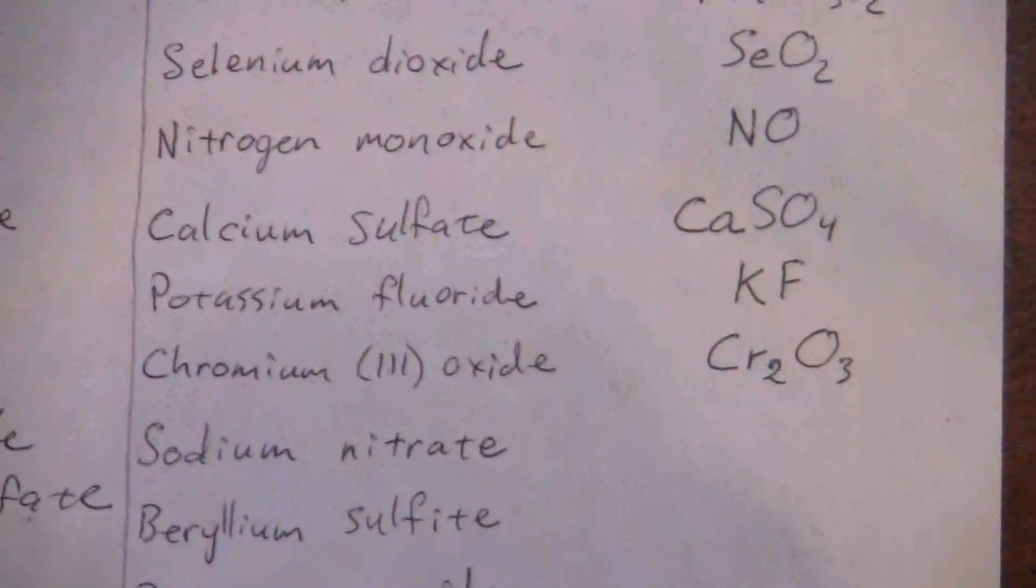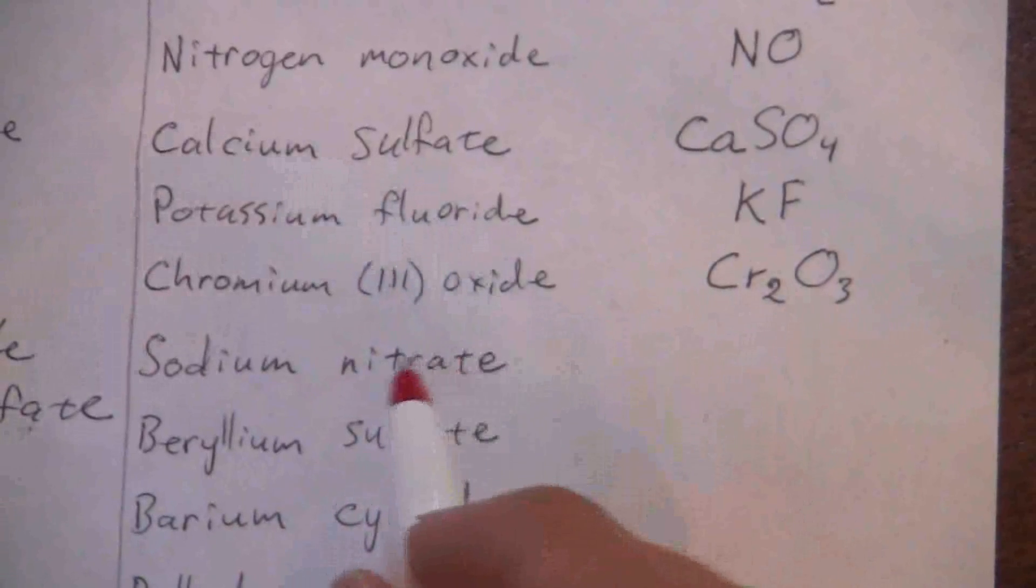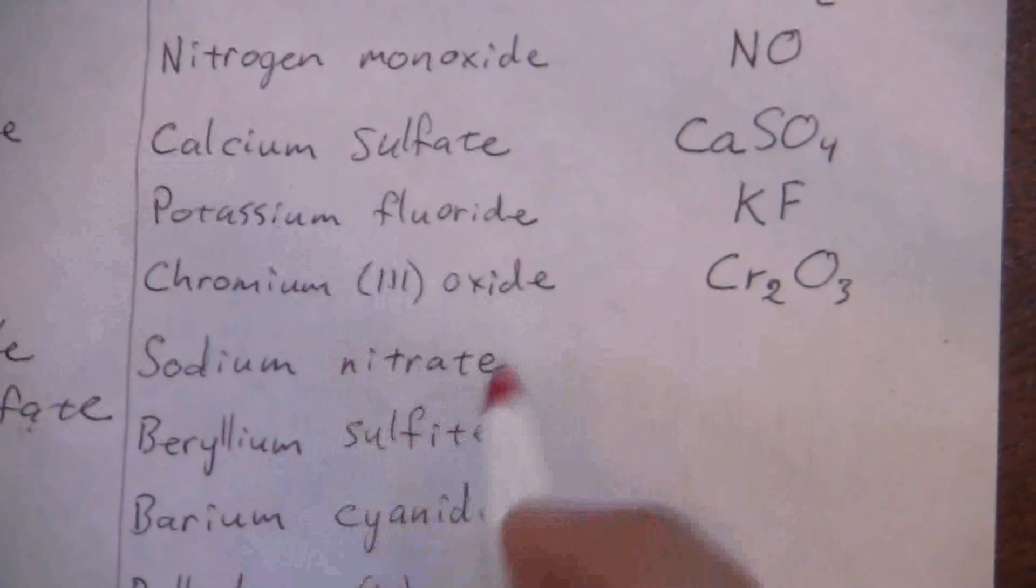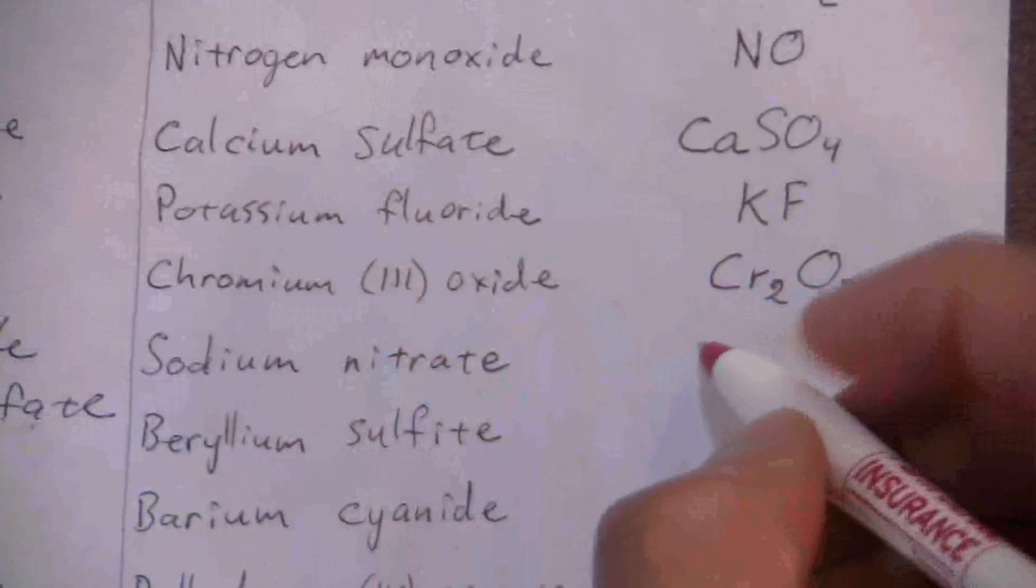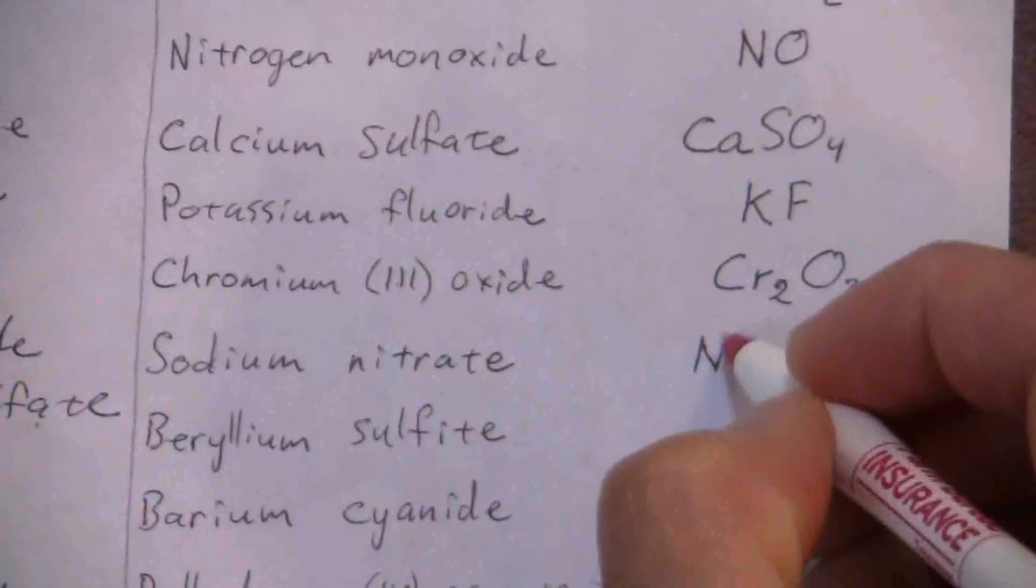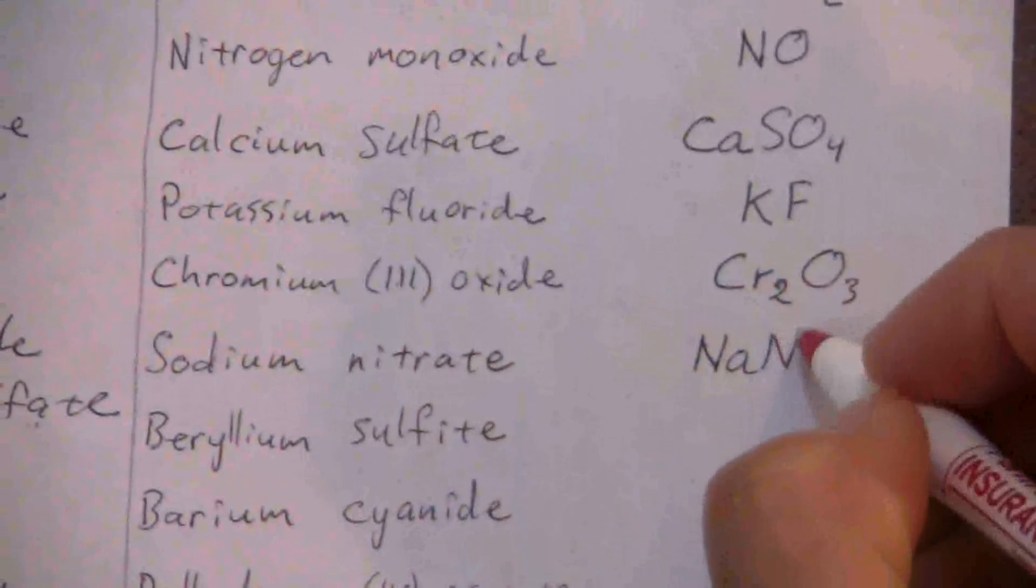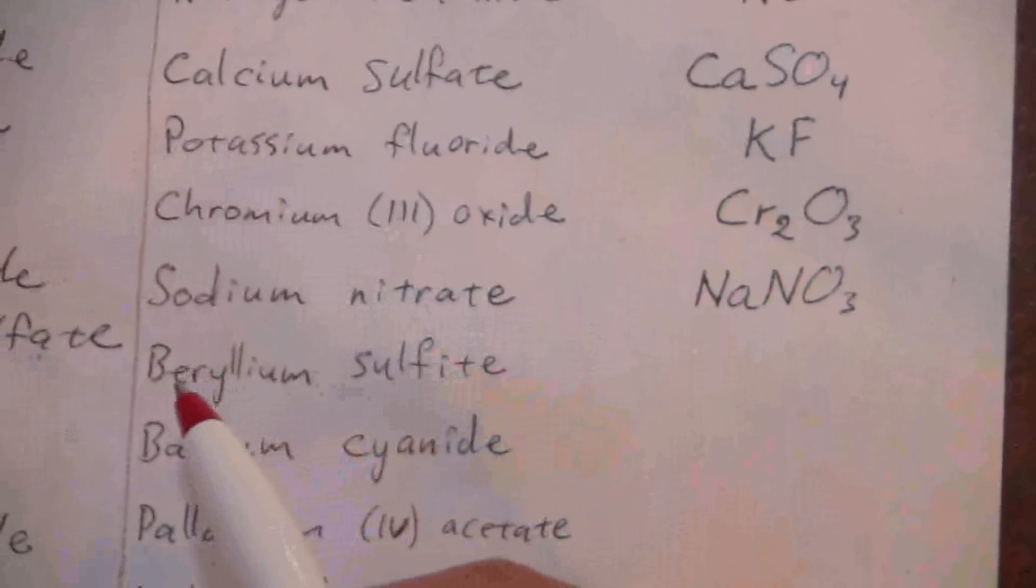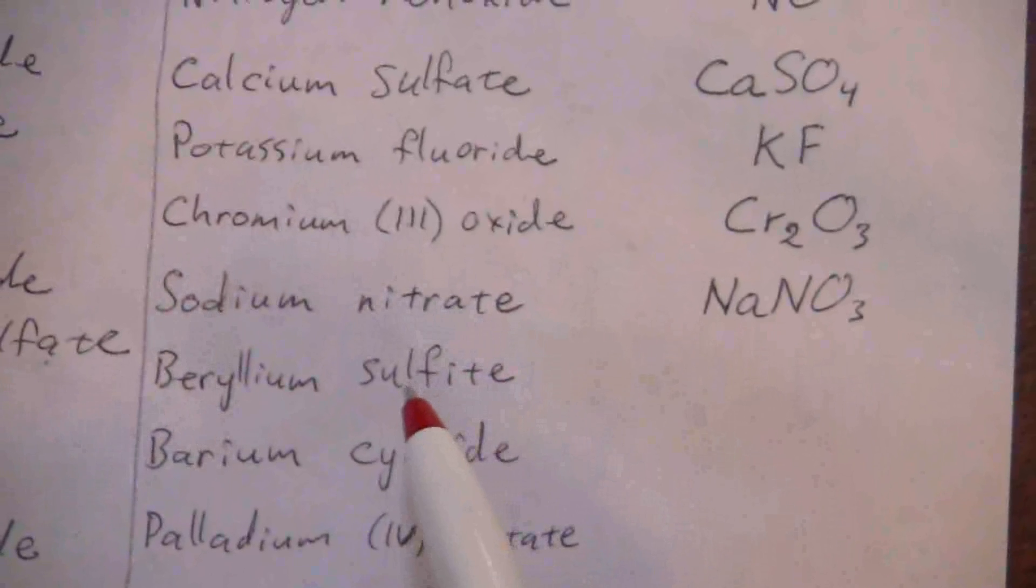Sodium nitrate - we know nitrate is NO3 with a negative one charge, so I have a negative one. My sodium is a positive one, it's in the alkali metal group, so that goes together one to one: NaNO3.